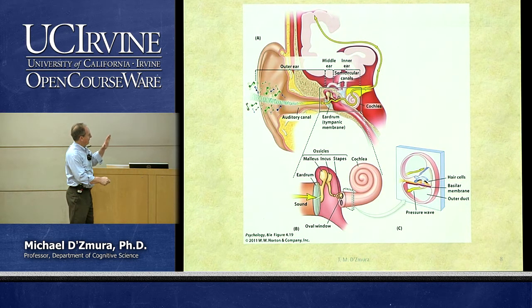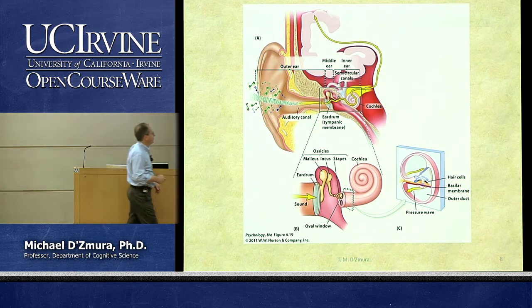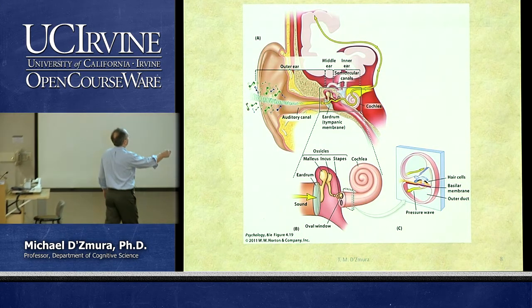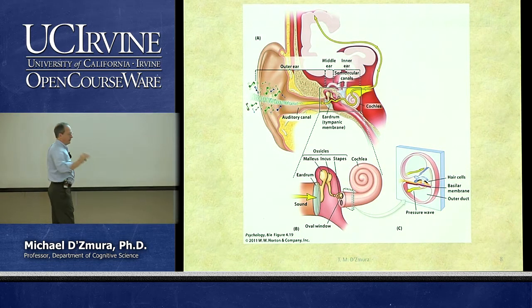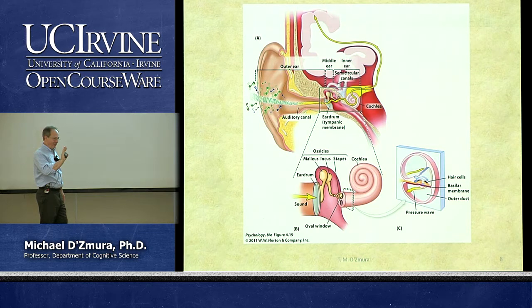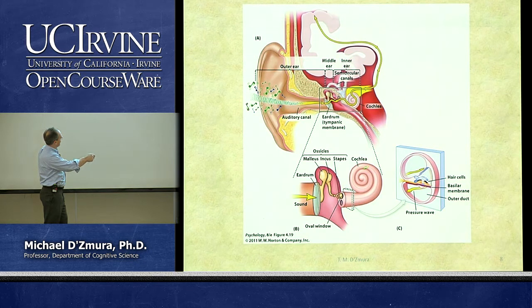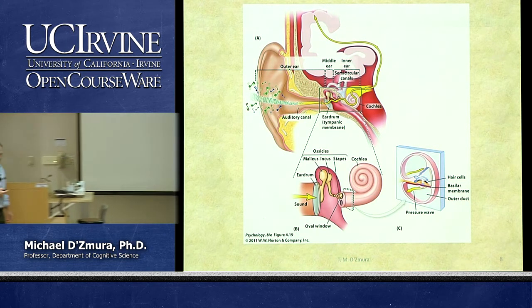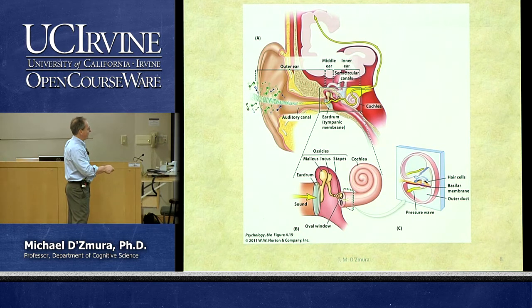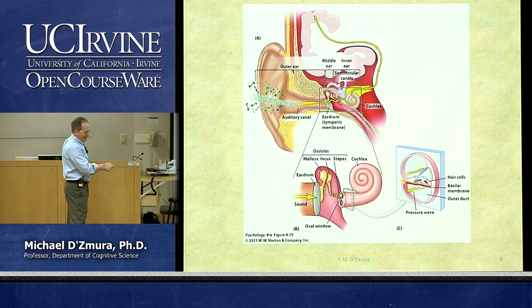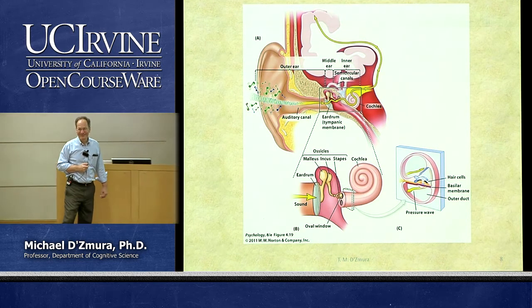The stapes is attached to the cochlea at what is known as the oval window. There's a membrane vibrating on the base end of the cochlea, which causes liquid inside the cochlea to vibrate — effectively a saltwater jelly type substance. That vibrates as a result of the oval window, which vibrates from the tiny bones, which vibrate from the tympanic membrane, which is caused by the sound pressure waves impinging on our ears. Does everybody see how that chain of vibration works?